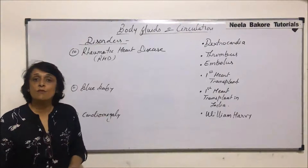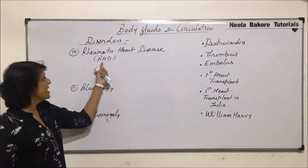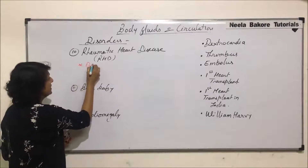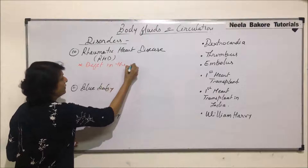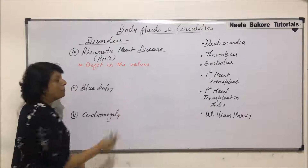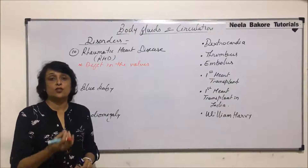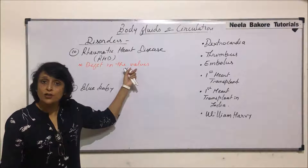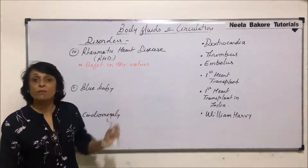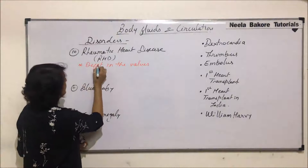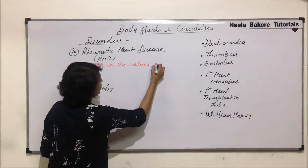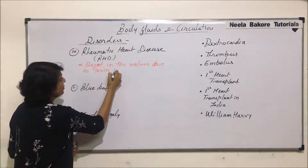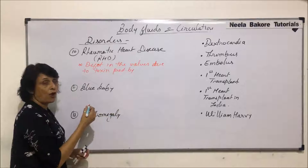There is a disorder known as rheumatic heart disease, commonly known as RHD. This is actually a defect in the valves, but this defect is not genetic or due to improper formation of the structure. It is due to a toxin which is produced by streptococcus bacteria — a defect in the valve due to toxin produced by streptococcus.